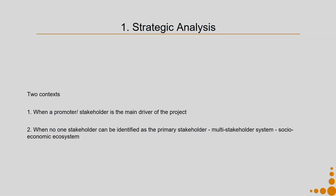In Context 1, there is a promoter or stakeholder who is the main driver of the project. This promoter or stakeholder comes to the designer asking: 'Can you help us design a sustainable product service system for our company?' In this context, the promoter has a clear idea about sustainable product service systems, or they have already implemented it, or they at least know about product service system design.